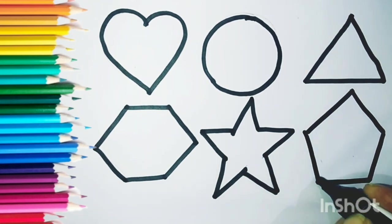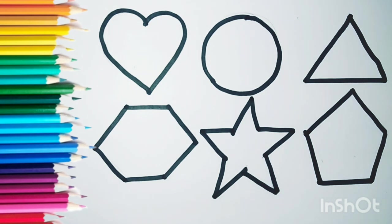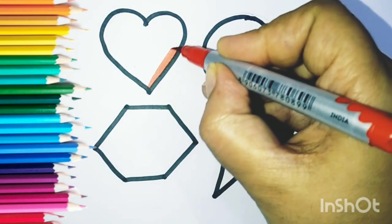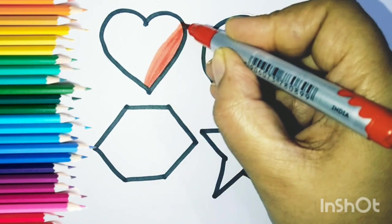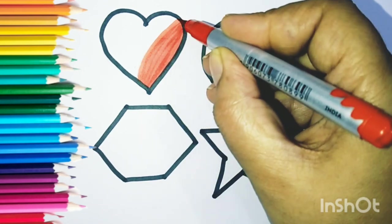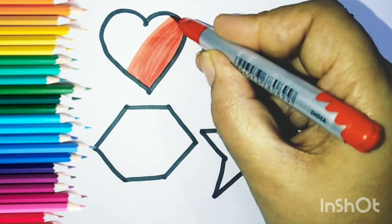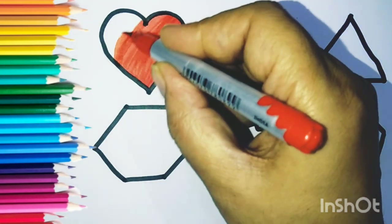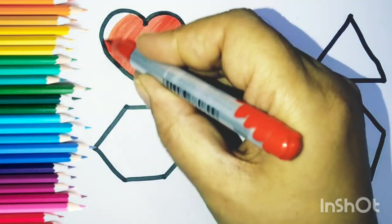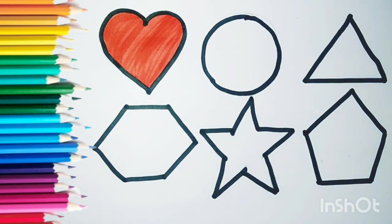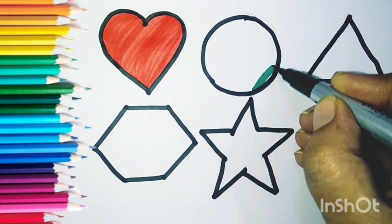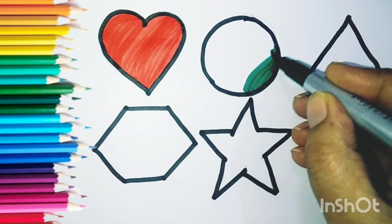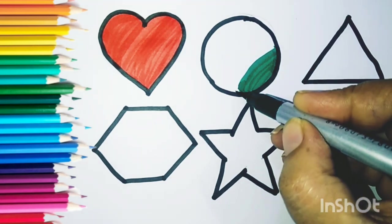Now the color this. Color red color in heart shape, red, red color in heart shape. And deep green color, deep green color in circle shape.